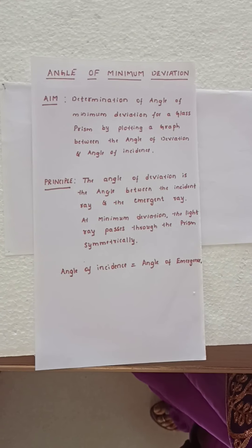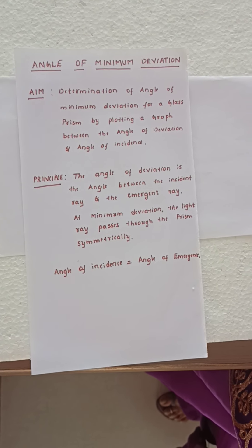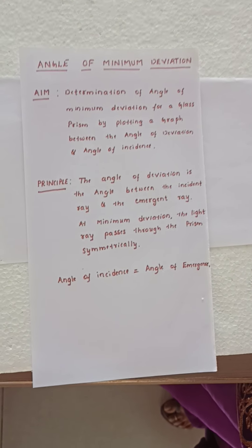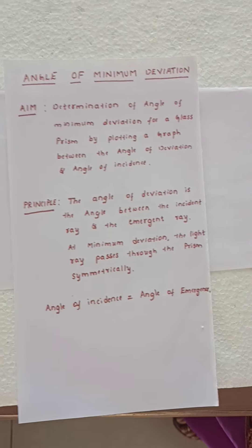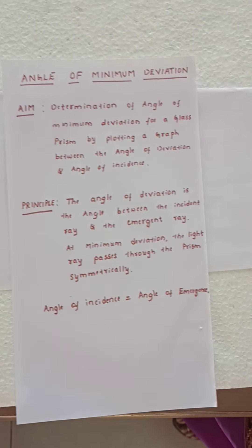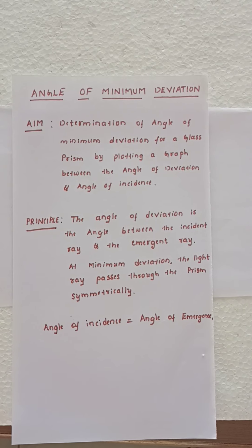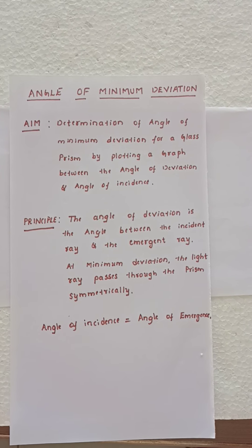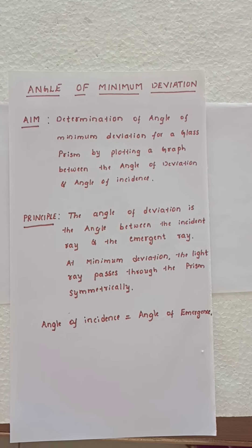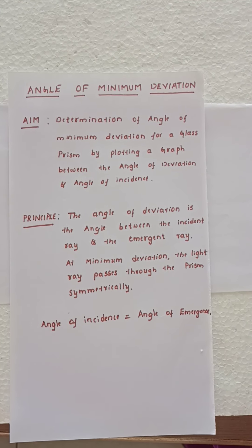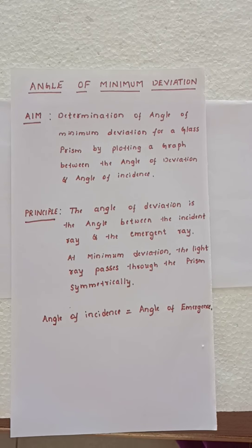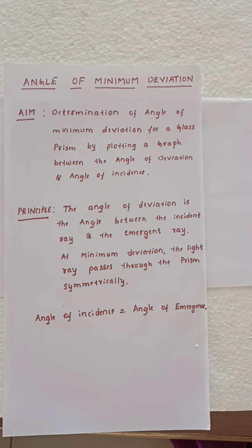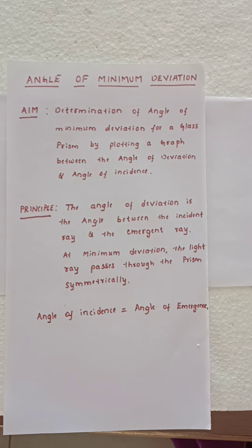Let us see the aim of the experiment: determination of angle of minimum deviation for a glass prism by plotting a graph between the angle of deviation and angle of incidence.